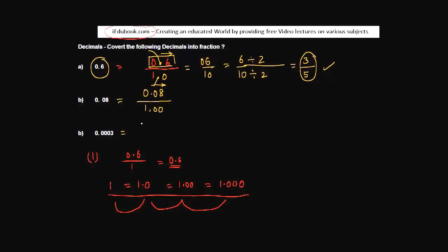Put in as many number of zeros as are the number of digits after the decimal place in the numerator, which is 1, 2 in this case. Remove the decimal for both the numerator and denominator. So 0 0 8 is 8 divided by 100.